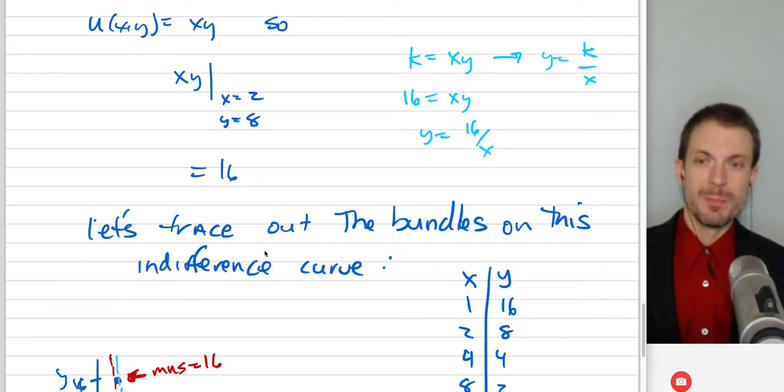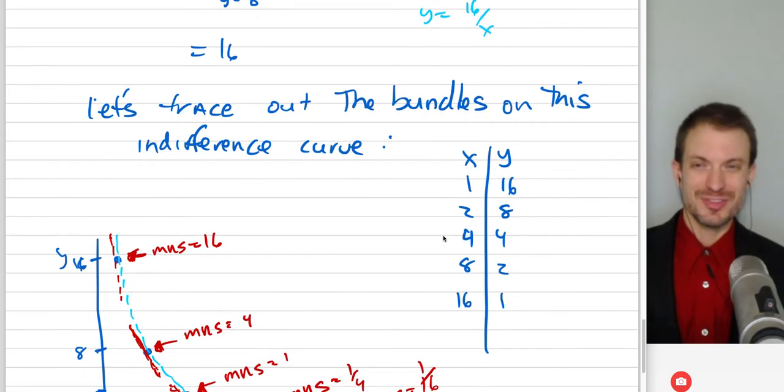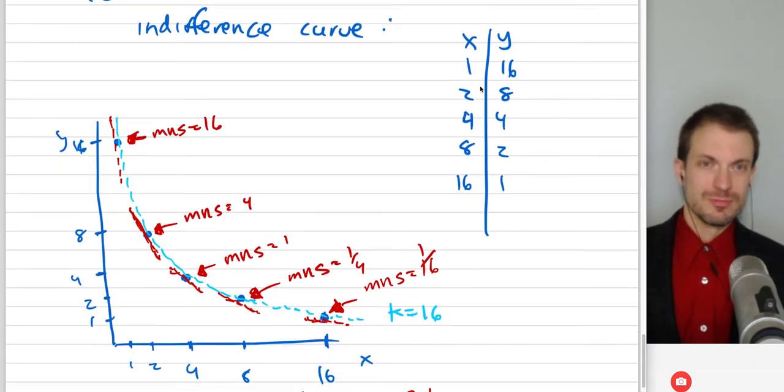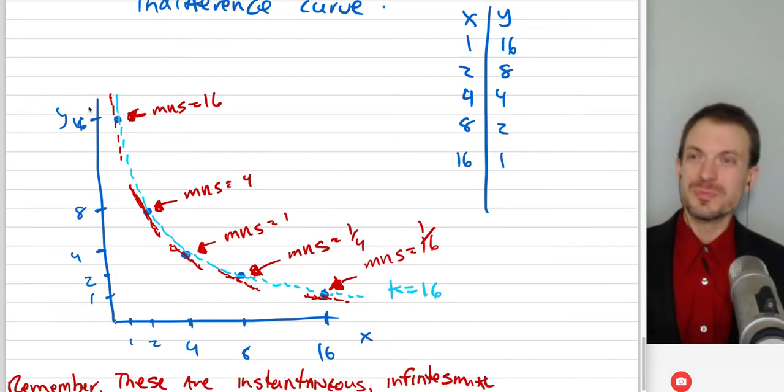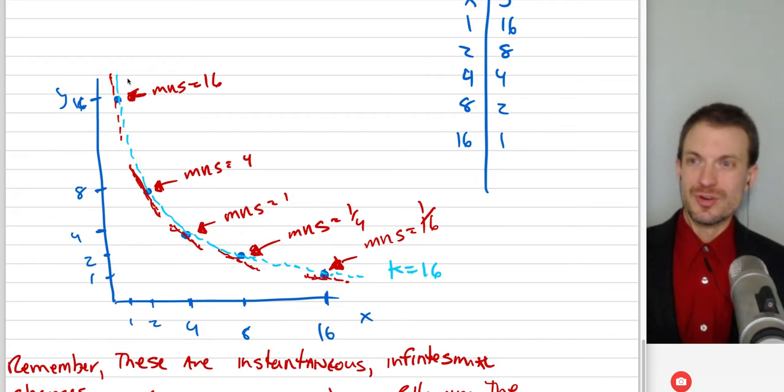Let's trace out the bundles on this indifference curve. So maybe this is easier to see. Let's take X and Y: 1 and 16, 2 and 8, 4 and 4, 8 and 2, 16 and 1. Let's plot it on the indifference curve. So here is the bundle 1 and 16, here is the bundle 2 and 8, here is the bundle 4 and 4, 8 and 2, 16 and 1. So these are all the bundles that correspond to 16 units of utility.